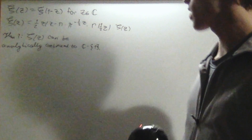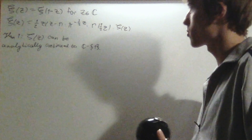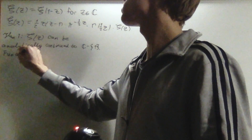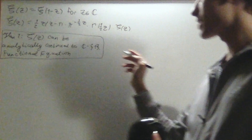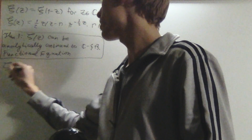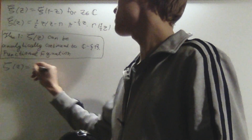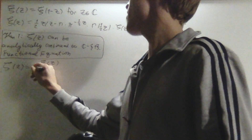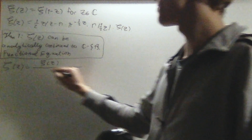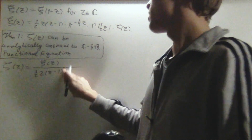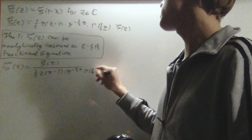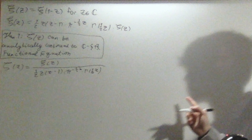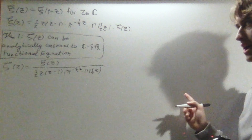So all complex numbers except for 1. And we also have the functional equation — this is also part of the theorem. The expression we're going to use for zeta should be pretty obvious: it's going to be xi of z divided by all of this, which is (1/2)z(z-1)π^{-z/2}Γ(z/2). So now let's go through every single piece of this and verify whether it's analytic on ℂ or not.